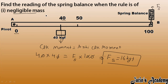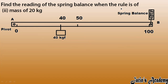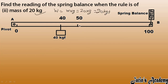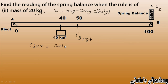Now for the second case: the rule also has a mass of 20 kg, so its weight = m × g = 20 kgf, acting at the center, i.e., at 50 centimeters. The spring balance still acts upward at 100 centimeters. Since the spring pulls upward, it creates an anticlockwise moment. Again, clockwise moment equals anticlockwise moment.